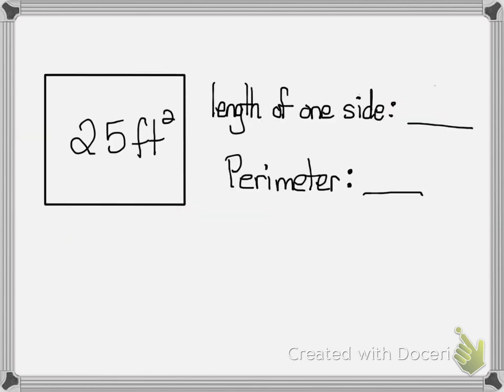Let's look at another example. As you can see the area is 25. The square root of 25 equals 5. So that's the length of one side, 5 feet. To find the perimeter I'm going to add 5 plus 5 plus 5 plus 5 and that will give me 20 feet.